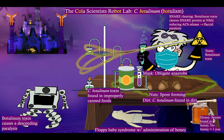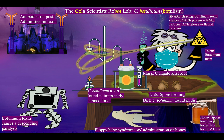But no despair — our mad scientist is not evil. He indeed has the treatment for botulism: our antidote, which is to administer anti-toxins post-exposure. Notice the posts by his lair with antibodies on top — we administer antibodies which act against the toxin. And that is the end of our story at the Cola scientist's robot lab.